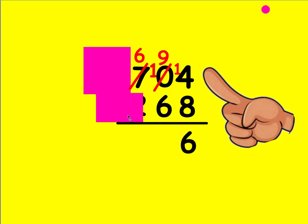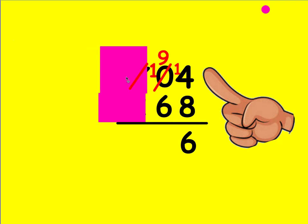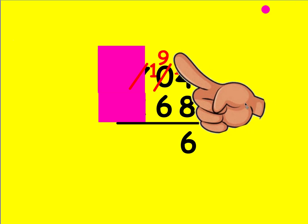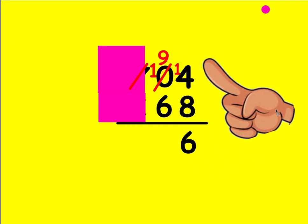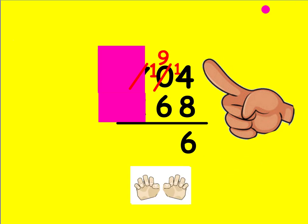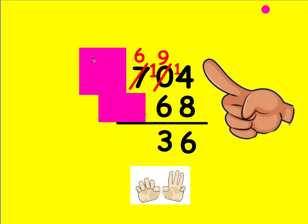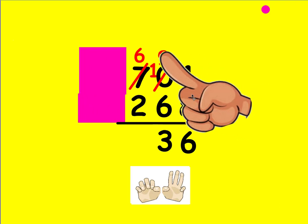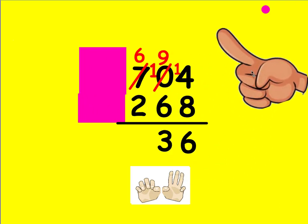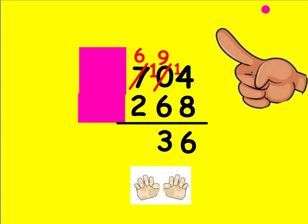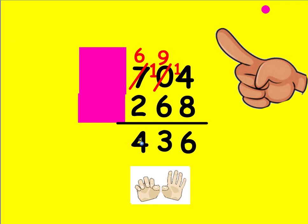Move over and look at the tens place value — cover everything else. Is the top number bigger? Yes. Make your fist 6 and count up to 9: 6, 7, 8, and 9. It took 3 fingers. Now go to the next place value. Is the top number bigger? Yes. Make your fist 2 and count up to 6: 2, 3, 4, 5, and 6. It took 4 fingers to get there.